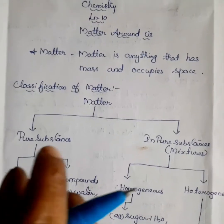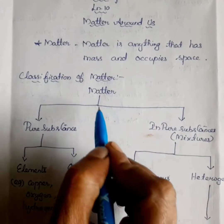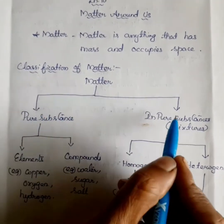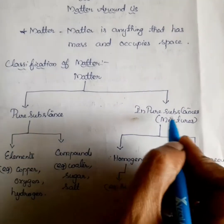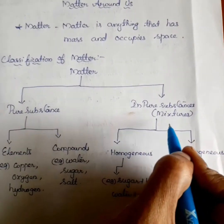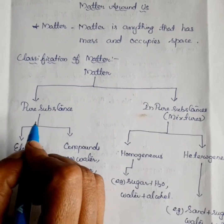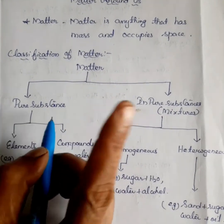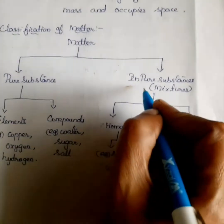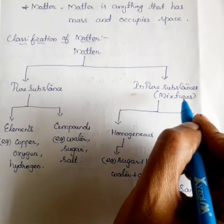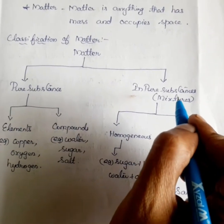Now we are going to discuss about the classification of matter. Matter is classified into two types: pure substance and impure substance — impure substance is otherwise called mixture. A pure substance has only one kind of particle, but a mixture contains more than one kind of particle.